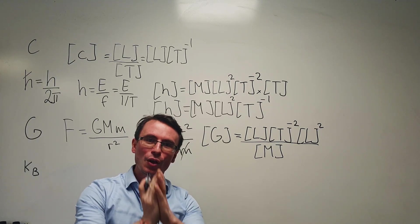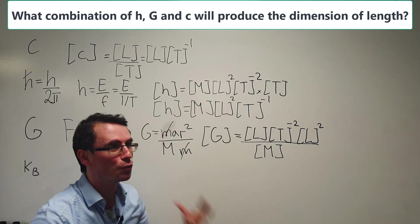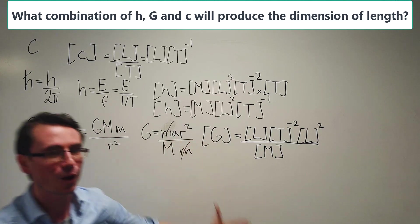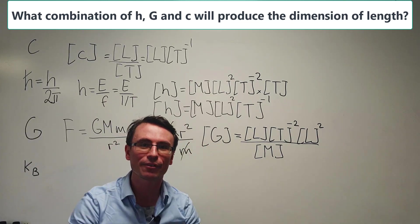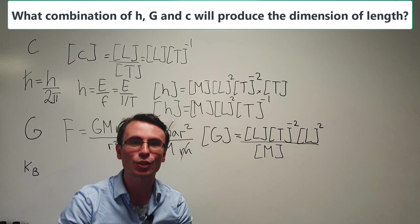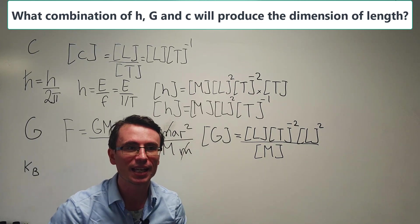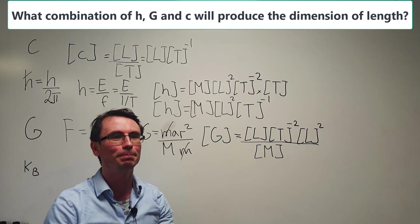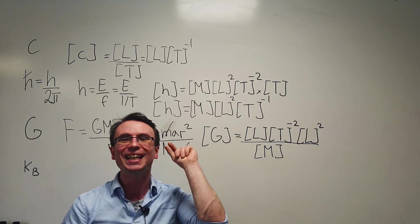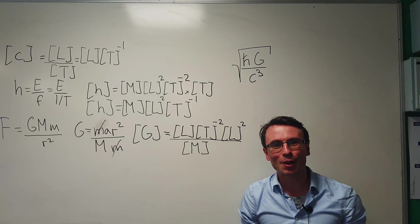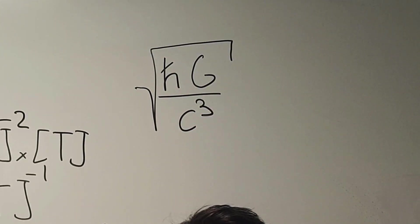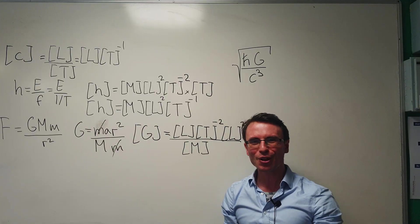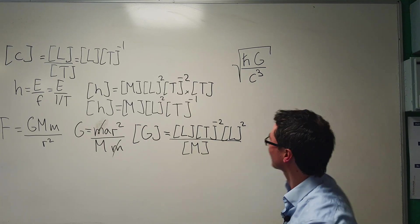Max Planck thought was, can we rearrange all of those constants into a combination that will just give us the dimension of length? That will be in a way the building block of length. Let's try this combination, the square root of H bar times G divided by C to the power of three. First off, let's check these dimensions.